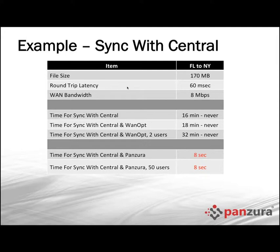They were also able to add more users to the project, complete projects quicker, and eliminate flights from Florida to New York — that had been another solution: at the end of the project, fly everybody up, spend a lot of money on hotel rooms, and really blast the project out. They don't have to do any of that anymore. The data table shows: 170 megabyte average Revit file, 60 millisecond latency — not a lot. WAN bandwidth of 8 megabits was acceptable. Yet it was taking 15, 16, 17, 18 minutes — sometimes never — to do the sync-with-central. With Panzura: eight seconds. With 50 users in Panzura: still eight seconds.